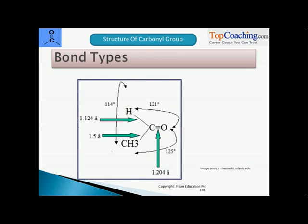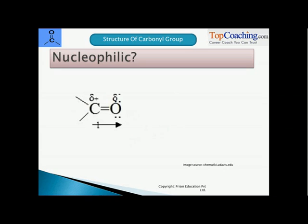What are the bond types? These are the essential facts. The CH bond length is 1.12 angstrom, CR bond length is 1.5 angstrom, the angle between H and O is 121 degrees and angle between C and R and O is 125 degrees.